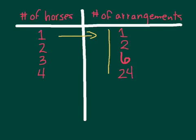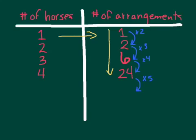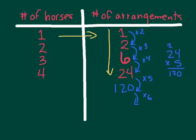Looking at the pattern going sequentially: one times two is two, two times three is six, six times four is 24. So the next one should be 24 times five. Five times four is 20, and five times 20 is 100 plus two tens more, which is 120. That pattern continues: 120 times six is 720.